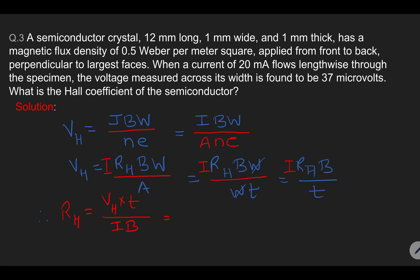Substituting the values: Hall voltage is 37 into 10 to the minus 6, thickness is 1 millimeter converted to 10 to the minus 3 meter, current is 20 milliampere converted to 20 into 10 to the minus 3 ampere, and magnetic field is 0.5 Weber per meter square. The final answer comes out to be 37 into 10 to the minus 7 meter cube per coulomb.